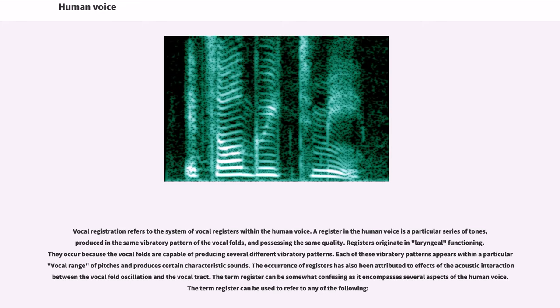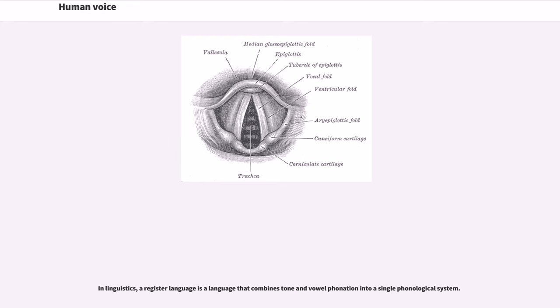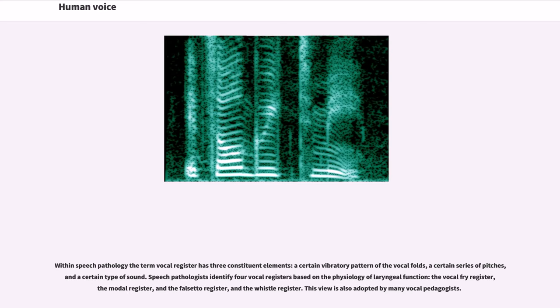The term register can be used to refer to any of the following. In linguistics, a register language is a language that combines tone and vowel phonation into a single phonological system. Within speech pathology, the term vocal register has three constituent elements: a certain vibratory pattern of the vocal folds, a certain series of pitches, and a certain type of sound. Speech pathologists identify four vocal registers based on the physiology of laryngeal function: the vocal fry register, the modal register, the falsetto register, and the whistle register. This view is also adopted by many vocal pedagogists.